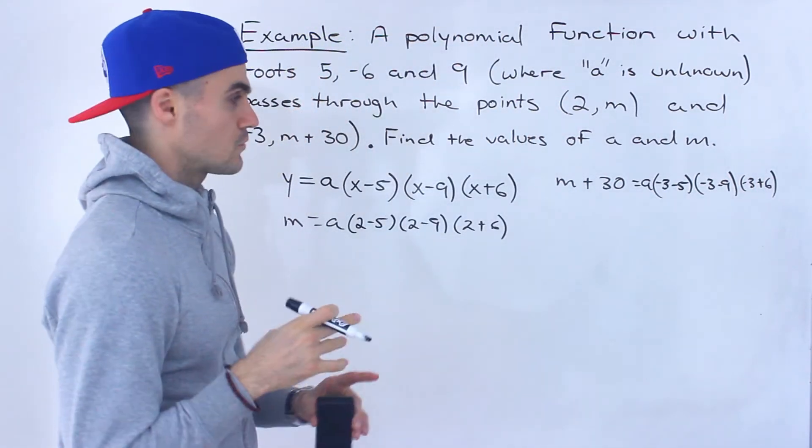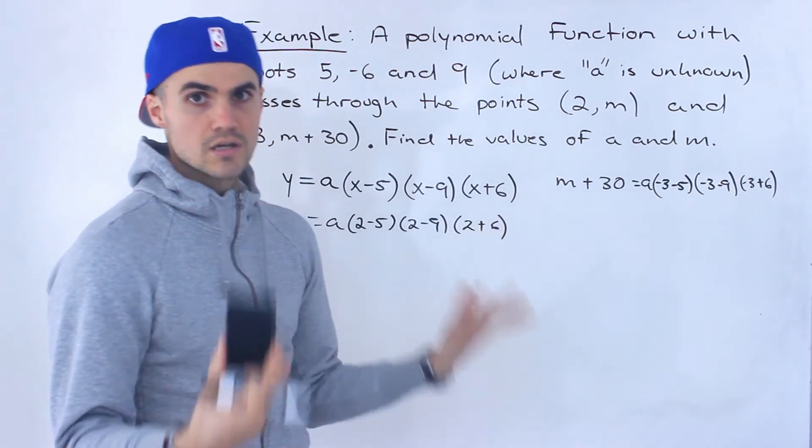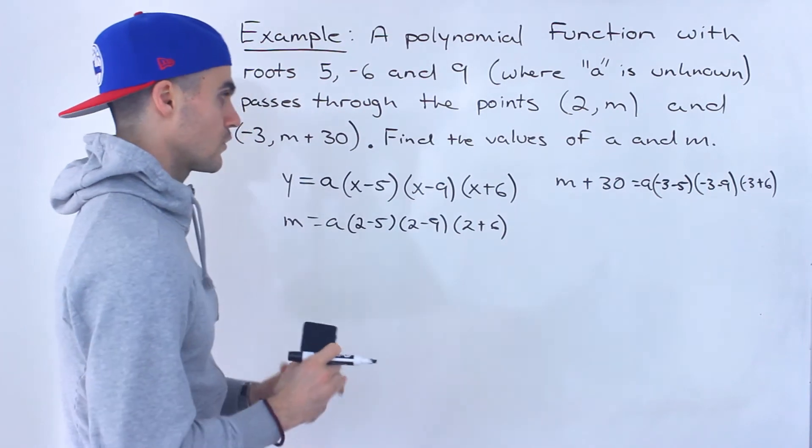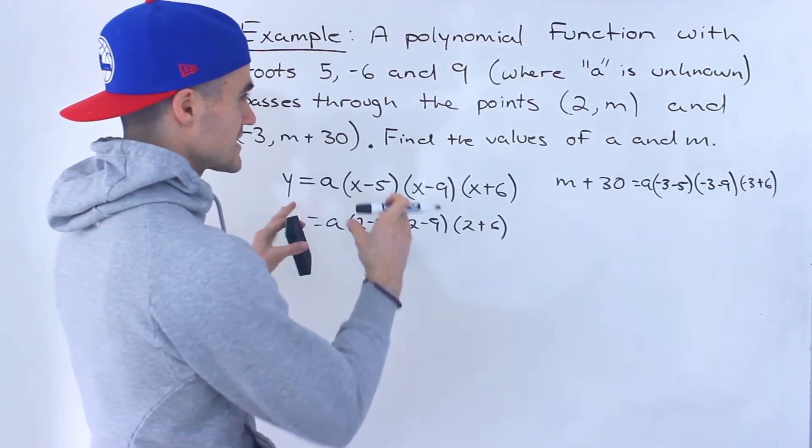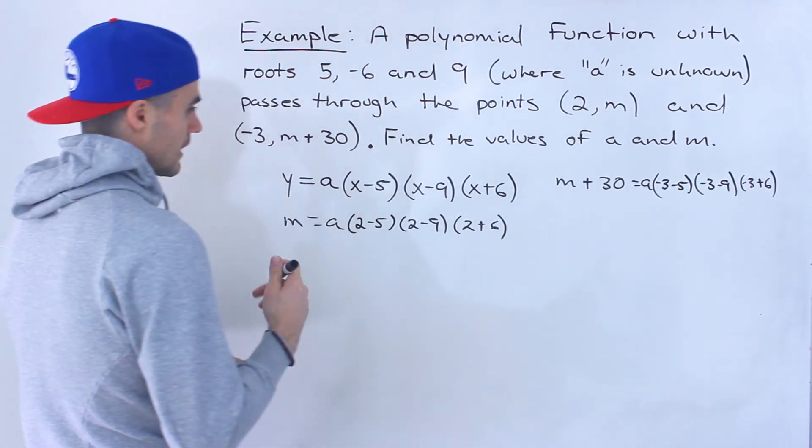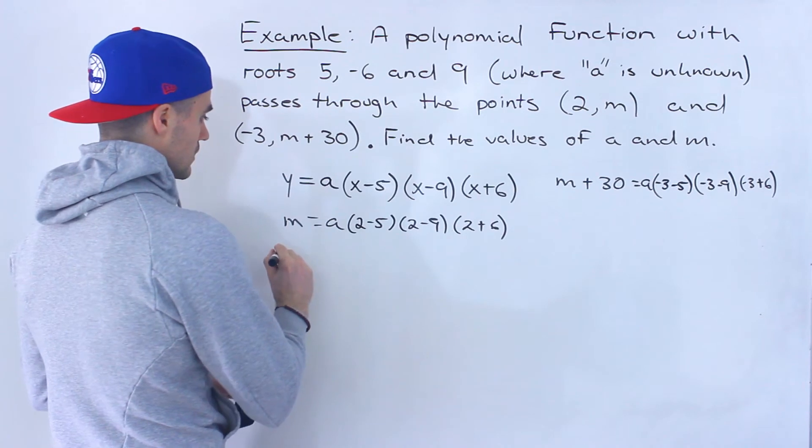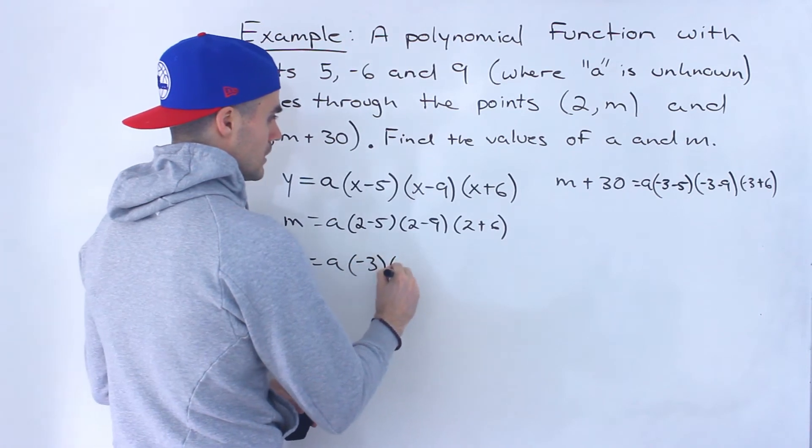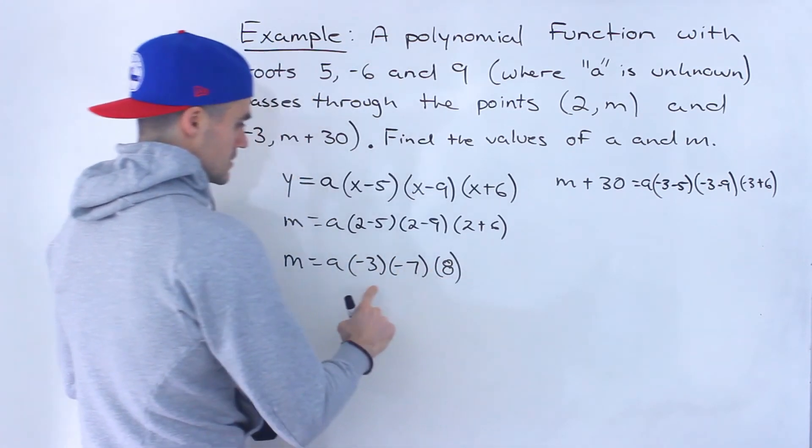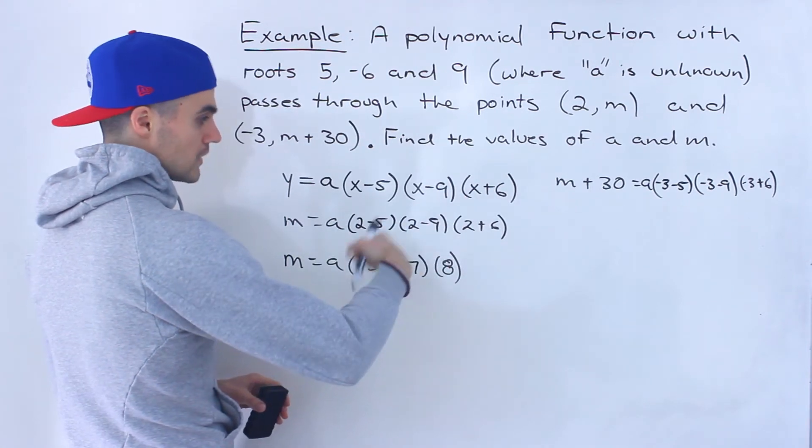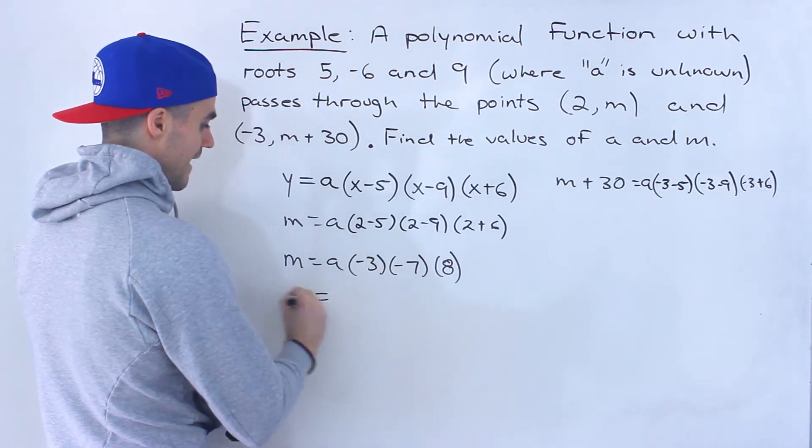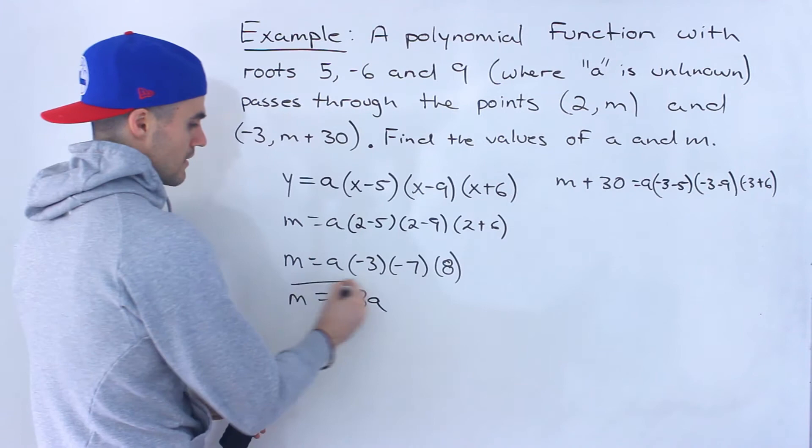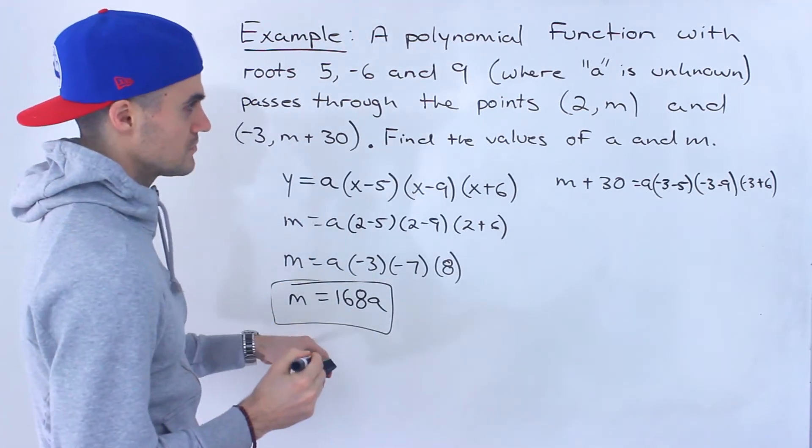And hopefully at this point you see where we're going, we're gonna have two equations, two unknowns. We're gonna have to use substitution or elimination to solve for them. So it's actually not too bad of a question algebraically. It's just setting it up and understanding what to do can be a little difficult just because it's such a unique question. So if we simplify this we'll have M equals A and then over here we'll have negative 3, negative 7, and then 8. So this would be negative 3 times negative 7 is positive 21 times 8 gives us positive 168. So we'll have M equaling 168 times A. So that there is one equation. Can't really simplify that any further.